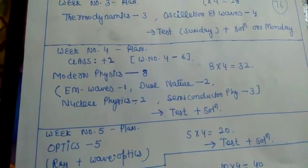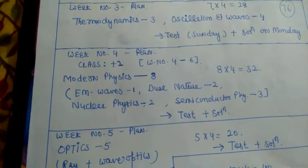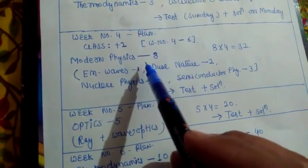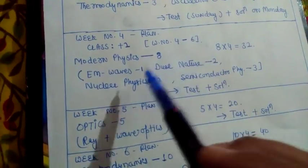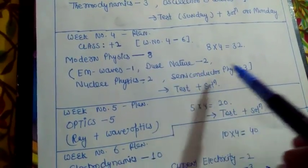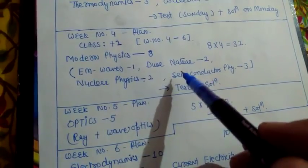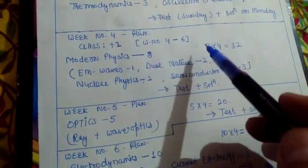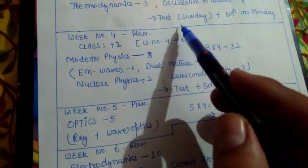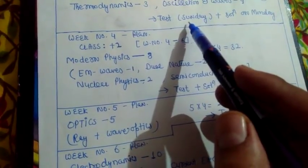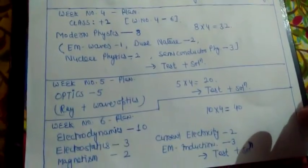I have divided the six-week plan: three weeks for plus one class and three weeks for plus two class. In the fourth week, we will discuss Modern Physics — it is an easy lesson. From here: Electromagnetic Waves, one question; Dual Nature and Matter, two questions; Nuclear Physics, two questions; and Semiconductor Physics, three questions — the easiest lesson. So in the fourth week we will cover eight questions, eight into four means 32 marks. Same test series and solution will be uploaded at the end of the week.